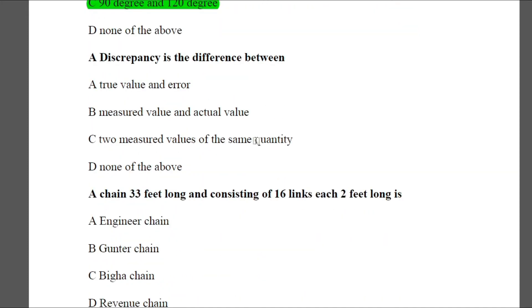Question 10: A discrepancy is the difference between — Option A: true value and error, Option B: measured value and actual value, Option C: two measured values of the same quantity, Option D: none of the above. The answer is C — two measured values of the same quantity.